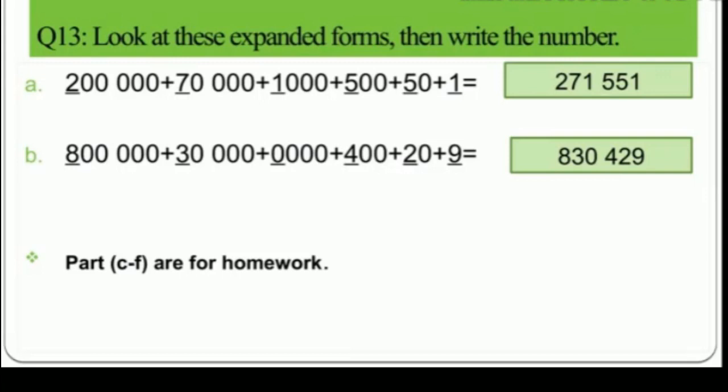Question 13: look at expanded forms and write the numbers — exactly opposite of question 12. The easiest trick: take the first digit of each term in the expanded form and combine them. Part A: terms are 200000 + 70000 + 1000 + 500 + 50 + 1. First digits are 2, 7, 1, 5, 5, 1. Combined: 271551.